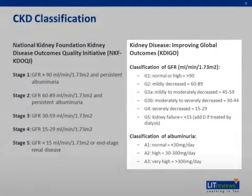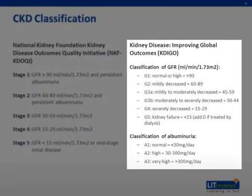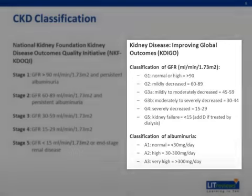There is another classification system for CKD established by the Kidney Disease Improving Global Outcomes Foundation, or KDIGO. As depicted in the right-hand column, this system includes separate classification for GFR and albuminuria.